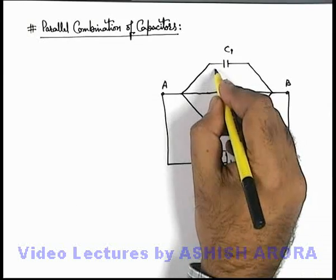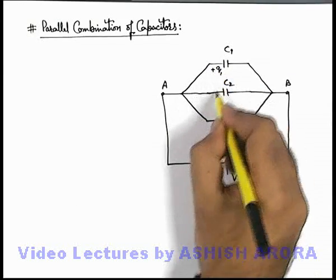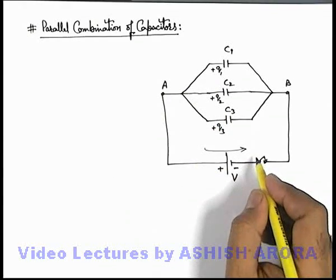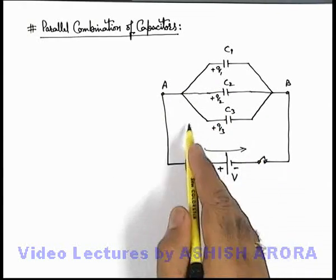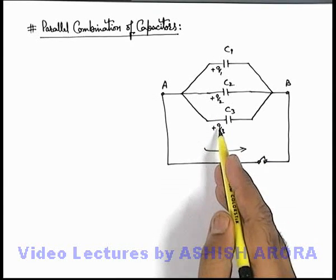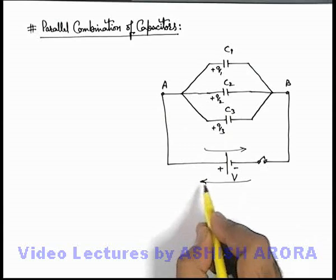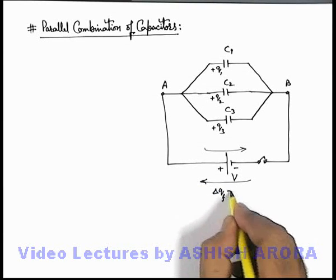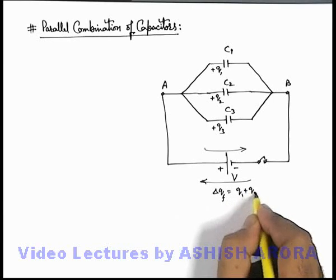So in this situation, say the charges appearing here are plus q1, plus q2, and plus q3. And the total amount of charge which is flown through the battery from left to right will be negative of q1 plus q2 plus q3. Or from right side to left side it'll be delta qf which can be written as q1 plus q2 plus q3.